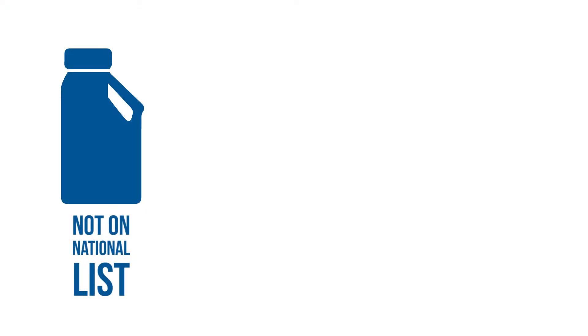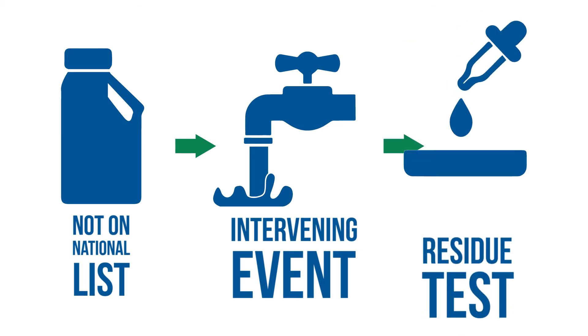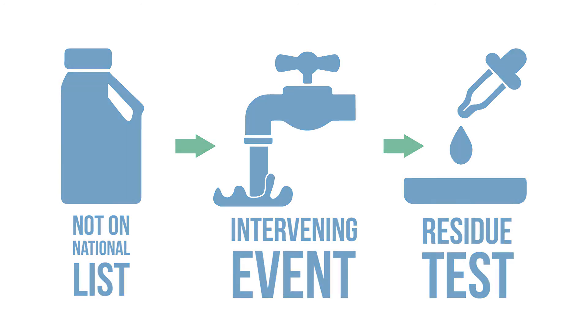If you're using a material that's not on the national list, essentially you'll have to perform some sort of intervening event. Typically that'll be like a rinse or a purge, and then the regulation requires that you perform a residue test to ensure that the residue has been completely removed from the equipment prior to handling organic product.